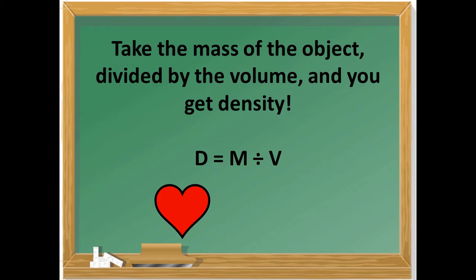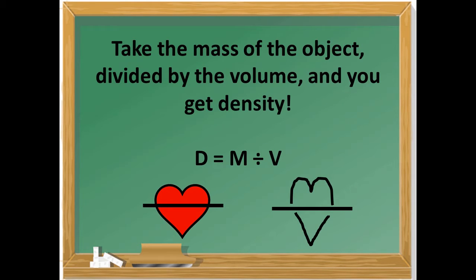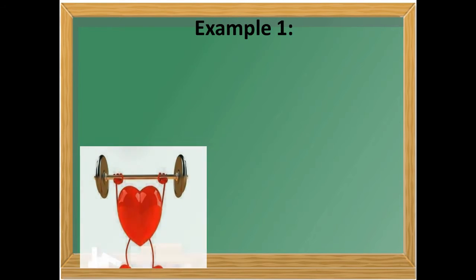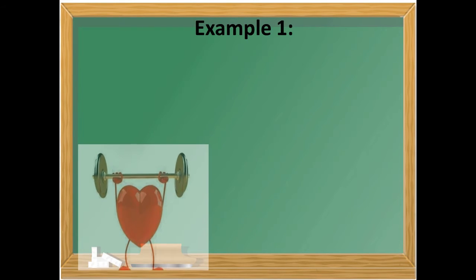Draw a line cutting your heart in half horizontally. When you split that heart apart, you're left with two letters — the letter M on top over the letter V on bottom. So you can see: density equals mass divided by volume. Don't forget the heart!